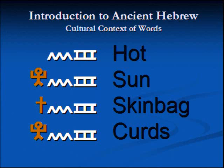The third one is 'chemet' — it's a skin bag. Those water bags that some people carry, the leather bags to put water in. Originally they were wine skins, or they put water in them. These are skin bags — that's a chemet. What's the connection between a skin bag, a sun, and hot? The fourth, 'chama,' is curds — cheese. What do these four have in common?